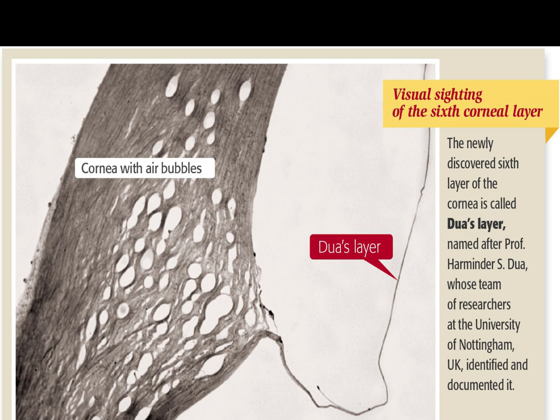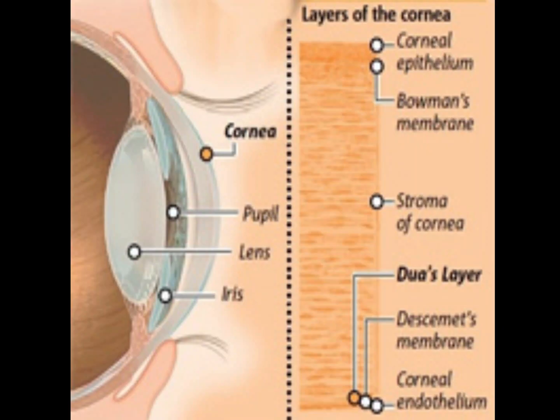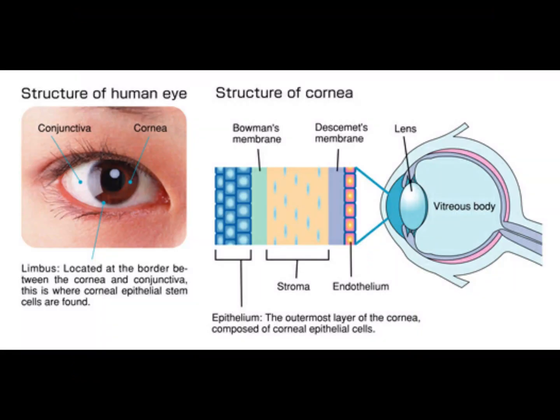Descemet's membrane is a thin layer that serves as the modified basement membrane of the corneal endothelium. The endothelium is a single layer of cells responsible for maintaining proper fluid balance between the aqueous and corneal stromal compartments, keeping the cornea transparent.